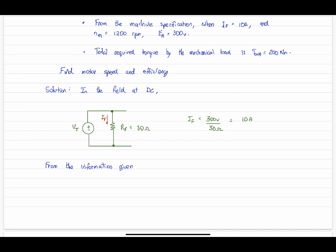And then from further information given, at 1200 RPM and 10 amps of current, so the same number, we're told that the induced voltage is 300 volts.